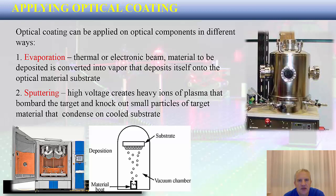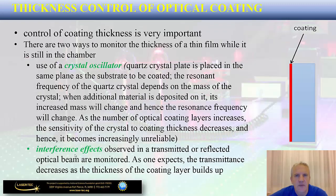In sputtering, a high voltage creates heavy ions of plasma that bombard a target and knock out small particles, which then condense onto a cool substrate as the coating. Both evaporation and sputtering are used in optics to create optical coatings. In addition, there must be some form of dynamic thickness control during the application process, stopping when the coating achieves the desired thickness.